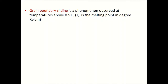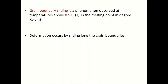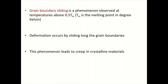Another important phenomenon is grain boundary sliding — observed at temperatures above 0.5 Tm, where Tm is the melting point in Kelvin. This means when a material is heated above roughly half its melting point, deformation can occur by sliding along the grain boundaries. This phenomenon leads to creep in crystalline materials, which is a fracture resulting from continuous deformation over a long period of time.